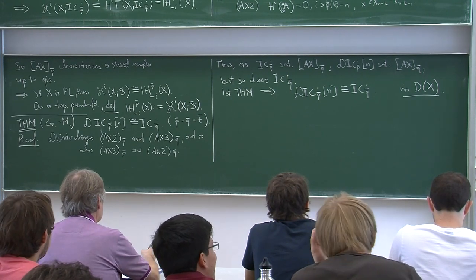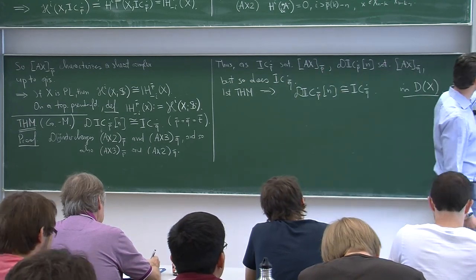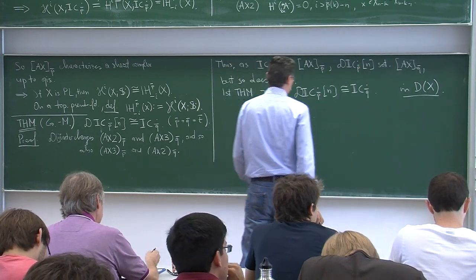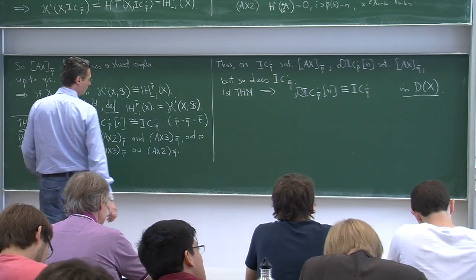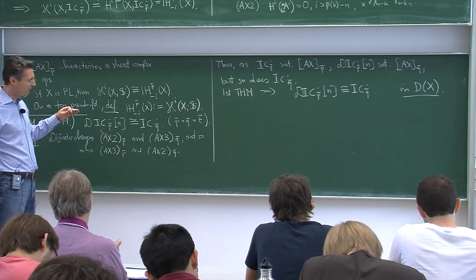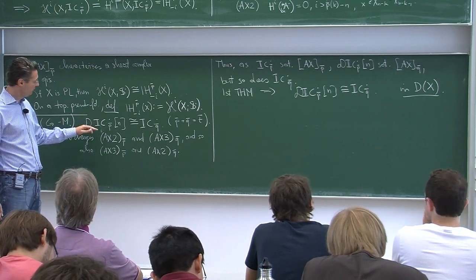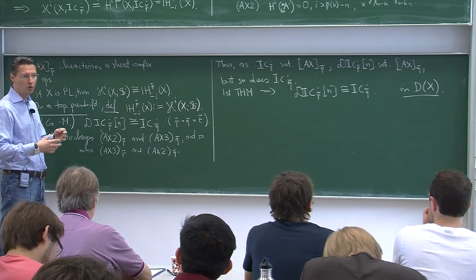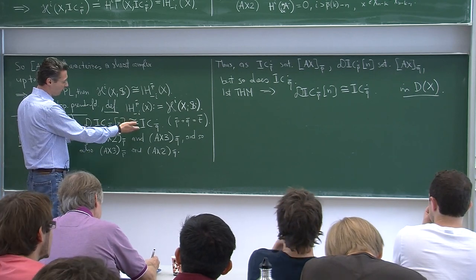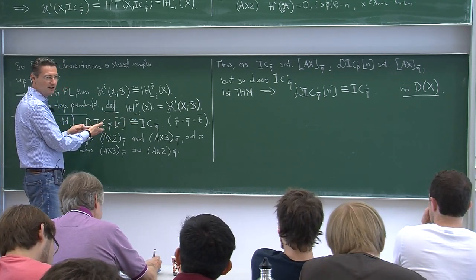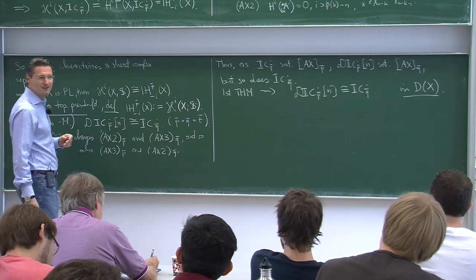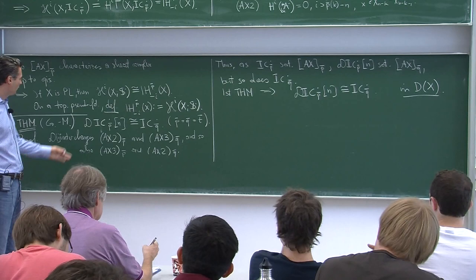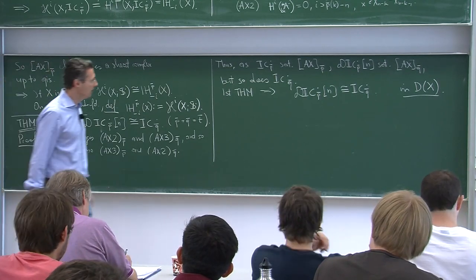So now we actually already have Poincaré duality in a very powerful sense: not just a global one, but because the dualizing functor dualizes complexes on all open subsets, we have Poincaré duality not just for X but over every open subset. It is much more powerful than just global Poincaré duality. As a simple corollary, we also have global Poincaré duality: there is a non-degenerate pairing between IH^I_P(X) and IH^{n-I}_Q(X) to R — everything with real coefficients.